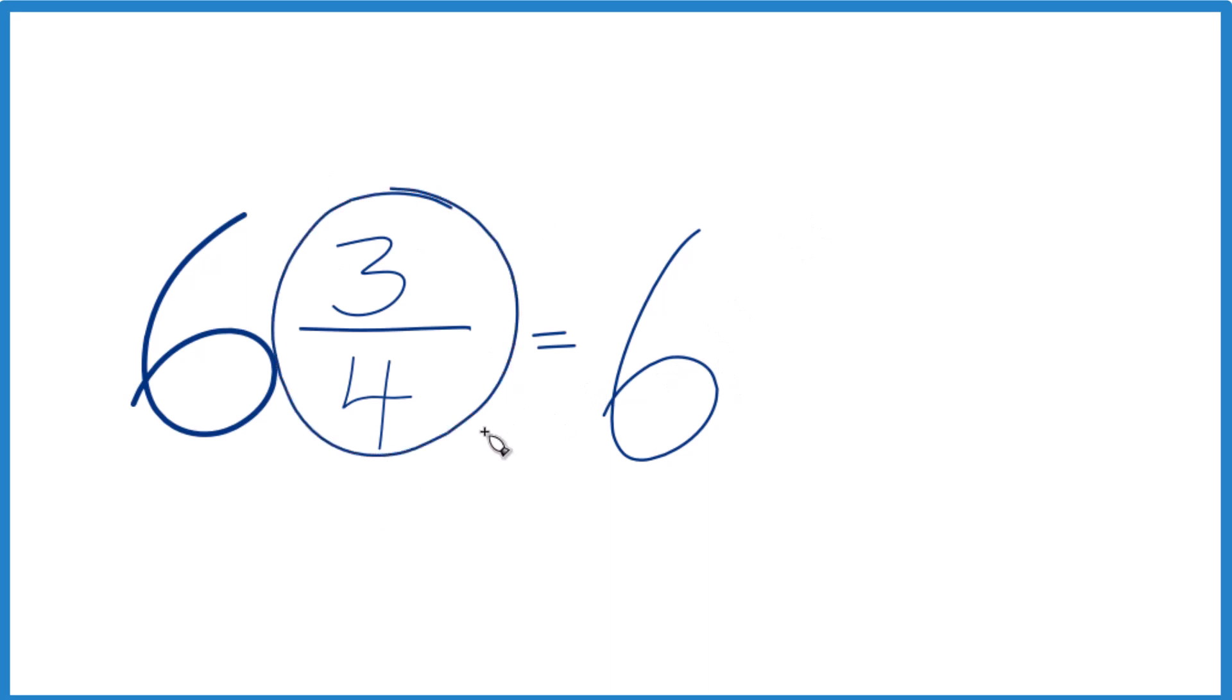You might know that three-fourths is the same as point seven five. And if you know that, well you're done. The fraction six and three-fourths equals the decimal six point seven five. But if you don't know that, we could divide three by four to get this into a decimal.